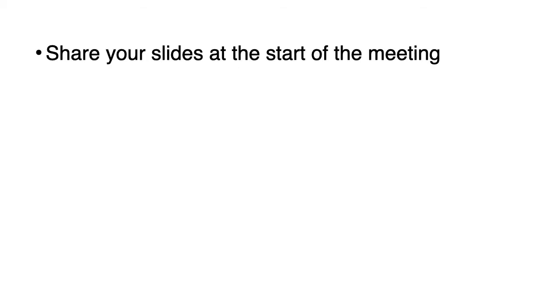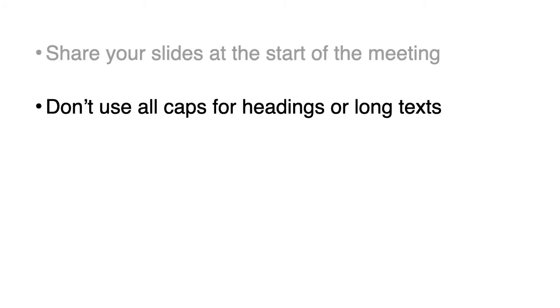So some simple things you can do. You can share your slides at the start of a presentation. Sharing a link to your slides allows people to see them on their own device — they can change the colors, zoom, or do whatever makes it easier for them to read them. They can follow on their own rhythm and go back if they miss something. Don't use all caps for headings and long text. When you write in capitals, you lose the shape of the word and make it harder to read for everyone, and for dyslexic people in particular.